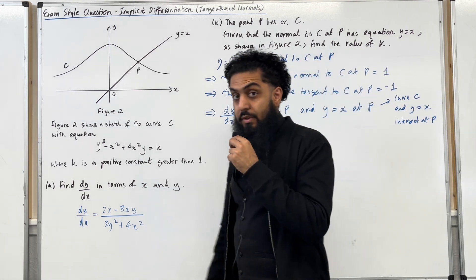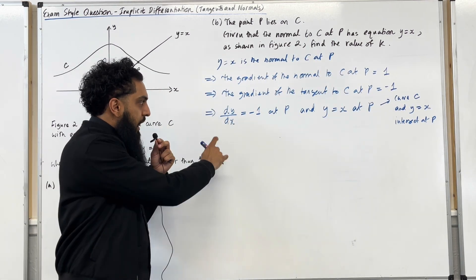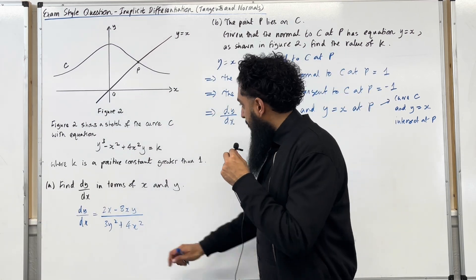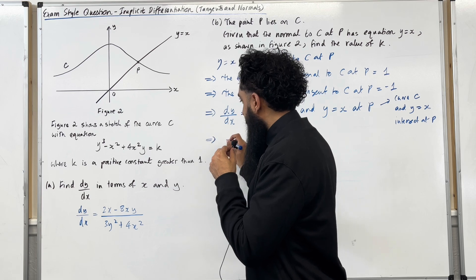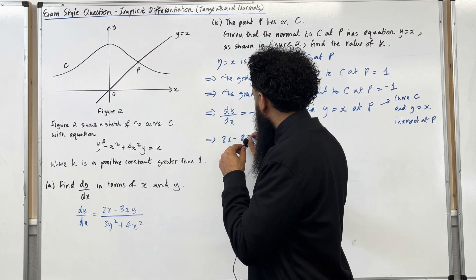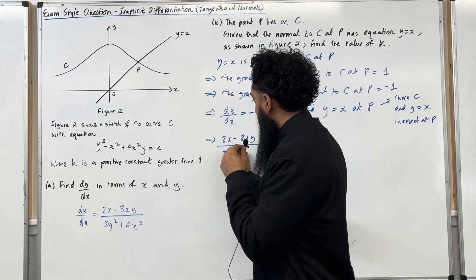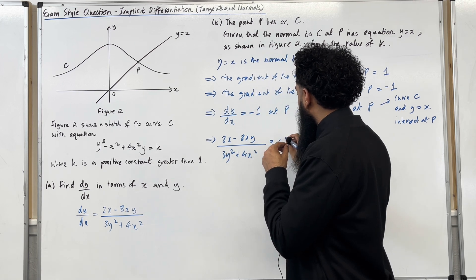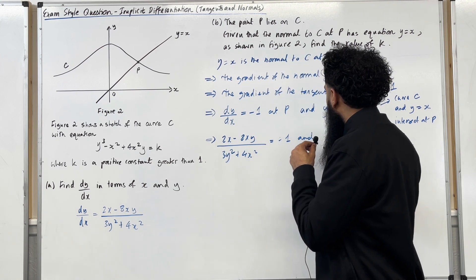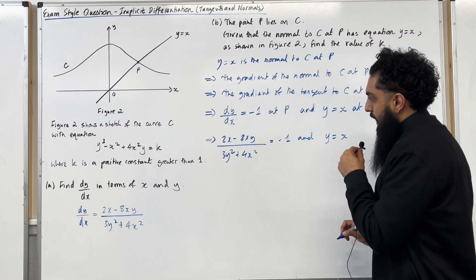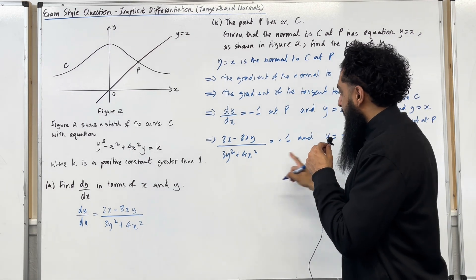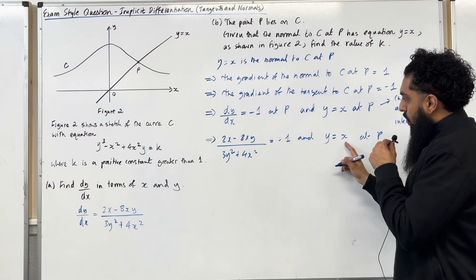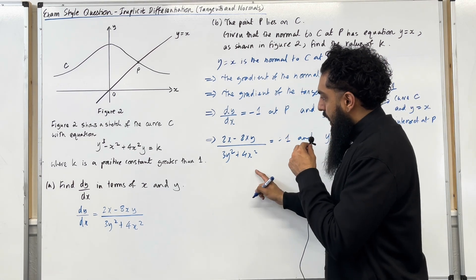So this is looking nice. Now I'm going to proceed forward. I know that the dy over dx was calculated in part A. It is this one over here. So I can write down 2x minus 8xy over 3y squared plus 4x squared is equal to minus 1. And we know that y is equal to x. So these two conditions are satisfied at P. So I can substitute y equal x into that particular equation.